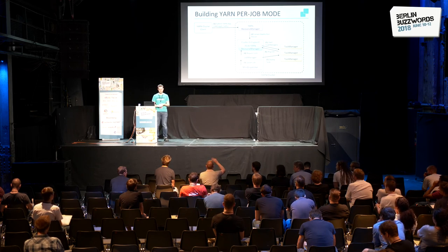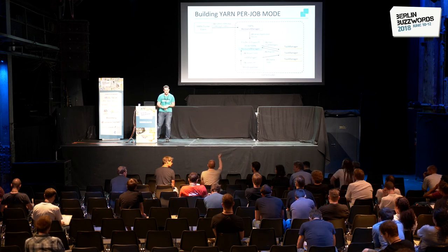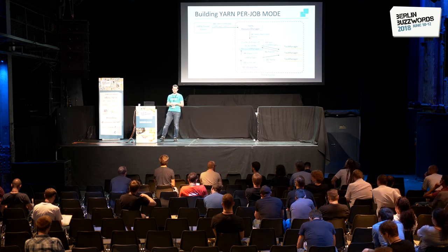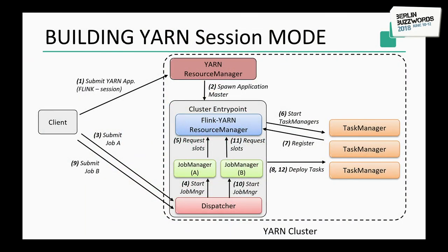Talking about dynamic resource allocation — is there an auto-scaling feature? How does it work to scale a job? What's currently possible is that the Flink cluster itself can scale. In session mode, you spawn only the single cluster entry point, and when you submit a job, it asks for resources. Those resources, after a job finishes, are not returned immediately but held for a configurable timeout. If a new job asks for more resources, the Flink cluster itself will auto-scale. The job itself will not auto-scale — you would take a snapshot, increase the parallelism, and start again.